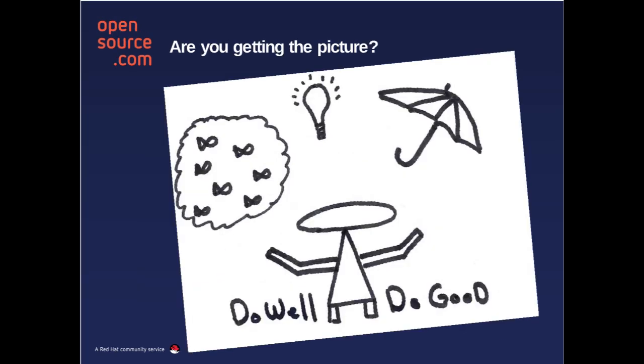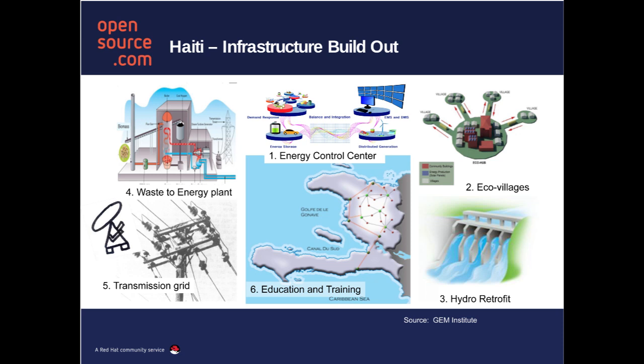Hopefully you're starting to get a picture. We've got a great idea, we're trying to build an ecosystem and a community, and we want to do well and do good. Let's step back and think about an application. In this case, the Gem Institute is actually looking at creating eco villages in Haiti and leveraging microgrids in our platform in this context.